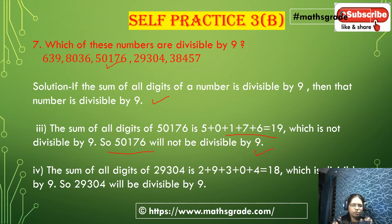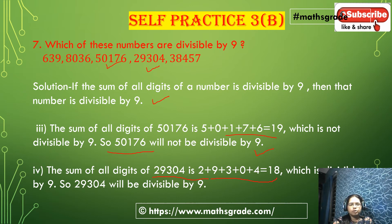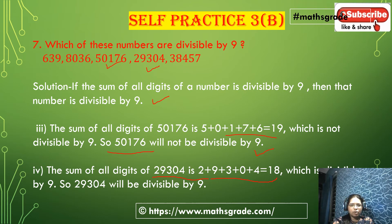Next number is 29,304. We have to check whether 29,304 is divisible by 9 or not. The sum of all the digits is 2 + 9 + 3 + 0 + 4. That is: 2 + 9 = 11, 11 + 3 = 14, 14 + 4 = 18. Since 18 is divisible by 9, the number 29,304 is divisible by 9.